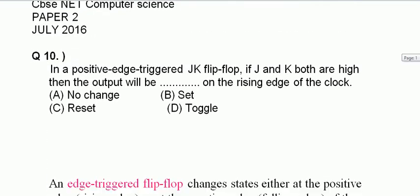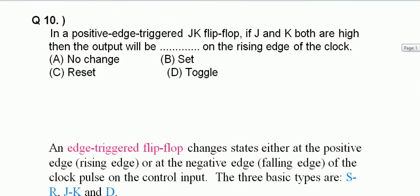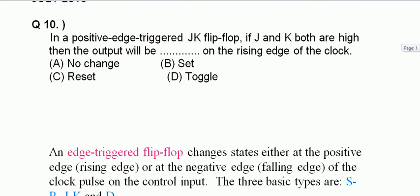Here we are given the positive edge triggered JK flip-flop, means it changes state at the positive edge. Now we have to see when both J and K inputs are both high and clock pulse is applied, what will be the output?